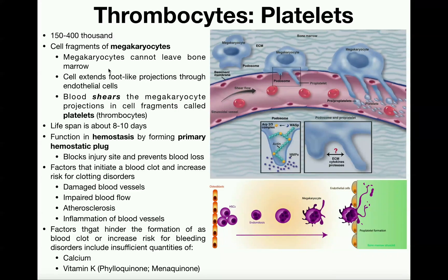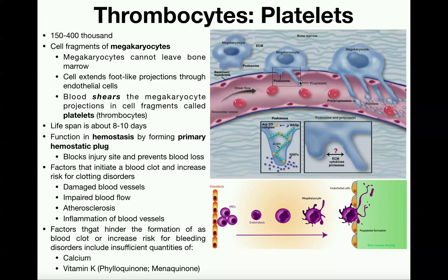Remember that hematopoiesis — the formation of all these formed elements — occurs in the red bone marrow. This megakaryocyte can't leave. So rather what it does to give the blood platelets is it extends arms through gaps in the endothelial cells. The megakaryocyte puts foot-like projections, almost like pseudopodia, through the endothelial cells and into the blood, and just with the sheer movement of the blood it's going to practically slice off pieces of these legs.